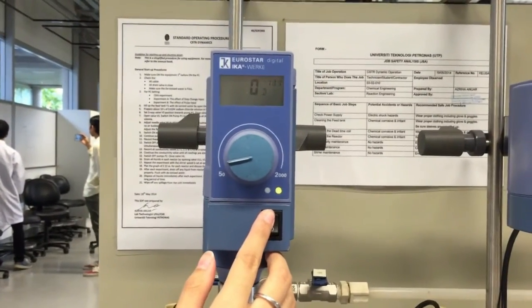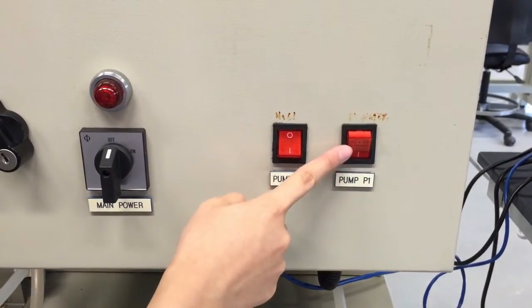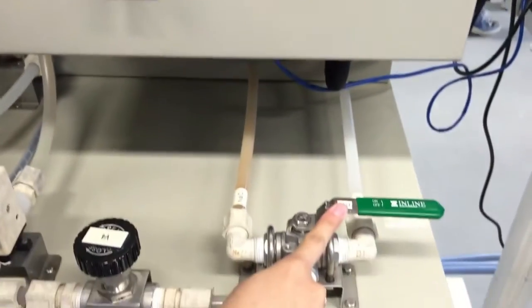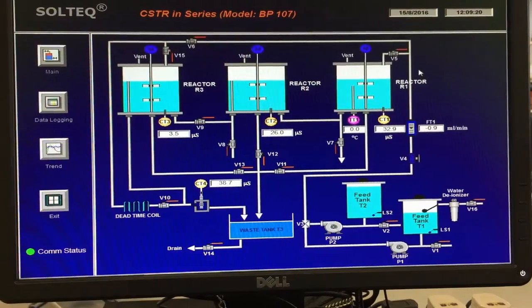Pump P1 is switched off and valve V3 is quickly set towards pump P2. Pump P2 is switched on and start the timer simultaneously.